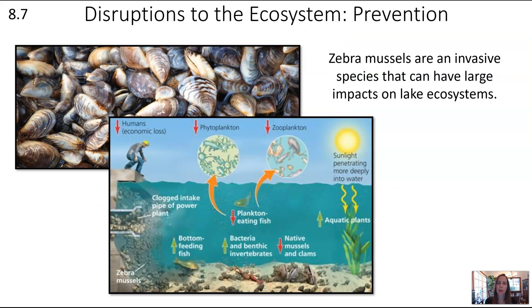The first step in addressing disruptions is preventing them. An example is zebra mussels, a very small invasive species in the US with a large impact on lake ecosystems. They can clog pipes and encrust other species, reducing phytoplankton, zooplankton, and native fish populations, with really detrimental effects.